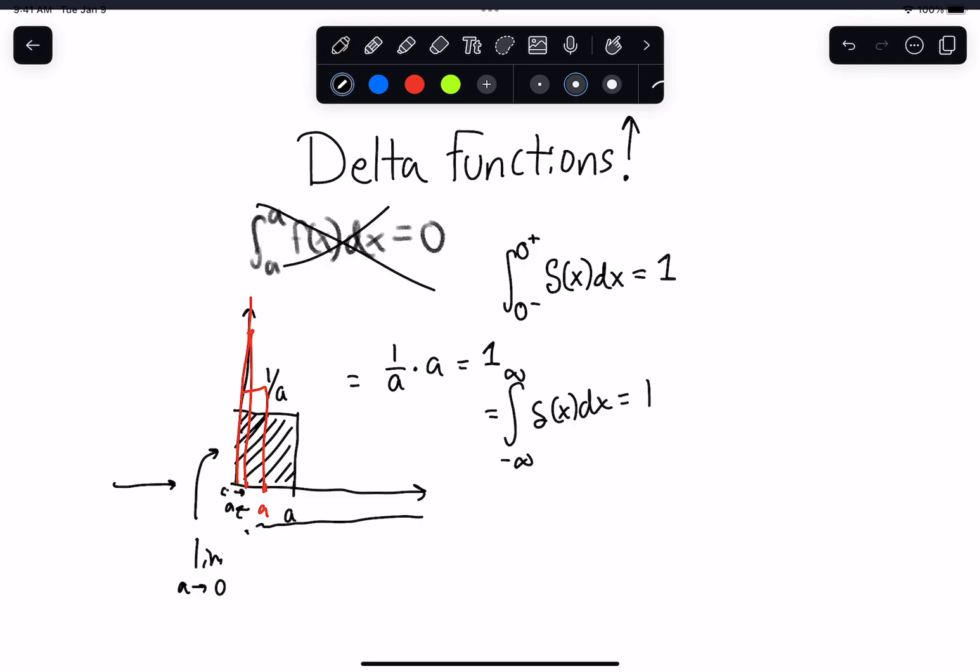And as a result, when we talk about delta functions, we really define them in terms of this limiting process. Because, once again, you can't really divide by 0. But what we want to say is it's just really, really small, as small as you could possibly get.